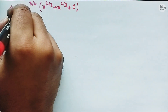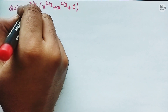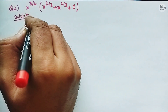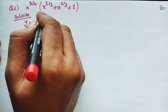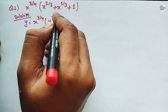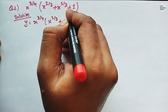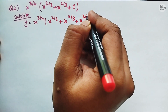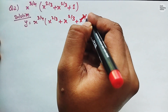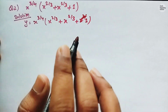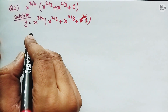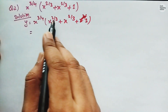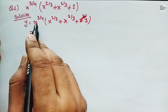Let's proceed with the solution. Write solution: let y equals x to the power 3 by 4 times the quantity x to the power 2 by 3 plus x to the power 1 by 3 plus 1. What we will do next is multiply the terms inside the bracket by x to the power 3 by 4.